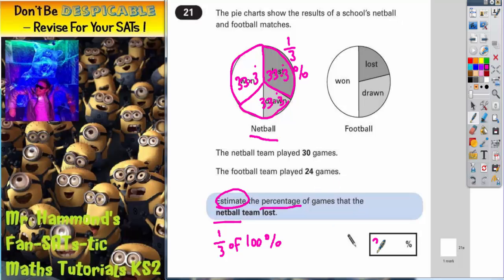And that would be a good estimate, 33.3 recurring percent. However, if you didn't put 33.3, it still doesn't mean you're going to get this question wrong because it does say estimate.